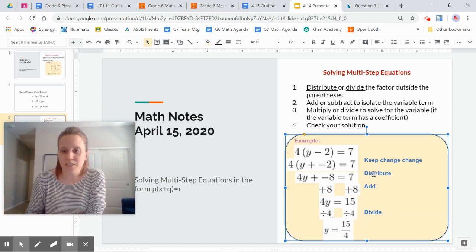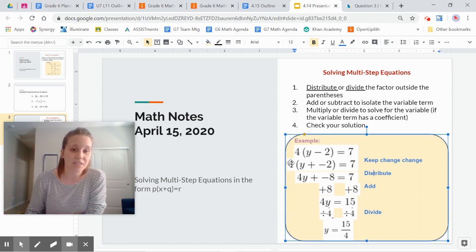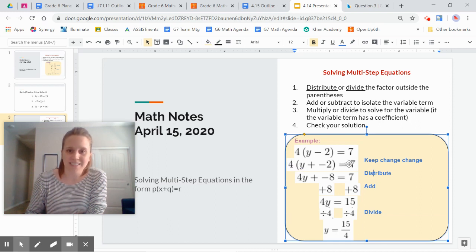So just a reminder, in this first step, this distribute step, that was a choice that I made to distribute. You could have also divided each side by 4. I didn't want to do that in this particular equation, because 4 doesn't go into 7 evenly. So that's one thing to consider when you're deciding, should I distribute or divide.